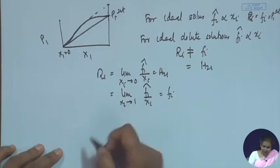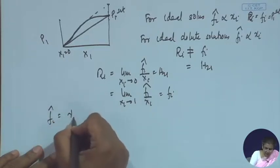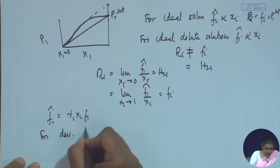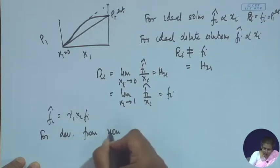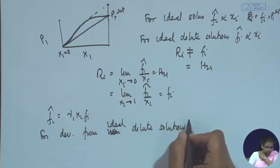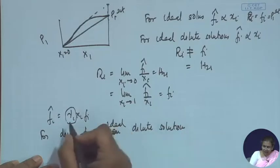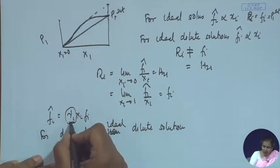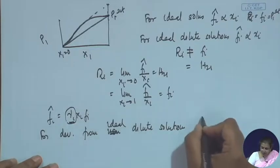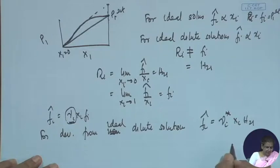Now, just as when there is deviation from an ideal solution we write f_i_bar = gamma_i * x_i * f_i, similarly for deviations from an ideal dilute solution, we should have some sort of an activity coefficient — let's call it gamma_i* — that captures the deviations from an ideal dilute solution. So in this case we write f_i_bar = gamma_i* * x_i * h_21.